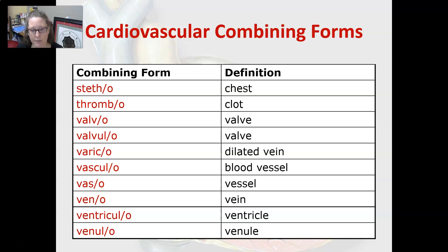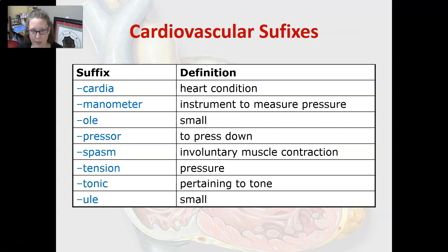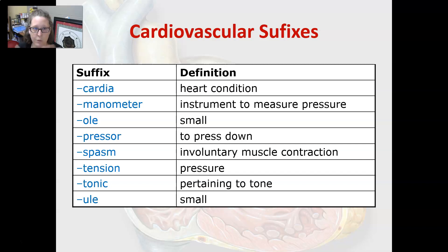Vascular is blood vessel, vaso is vessel, veno is a vein, ventricular is a ventricle, and venulo is a venule. The suffixes pertaining to the cardiovascular system: cardia means a heart condition, and manometer is an instrument to measure pressure. The fancy word for blood pressure cuff is sphygmomanometer — we all call it a BP cuff or blood pressure cuff.